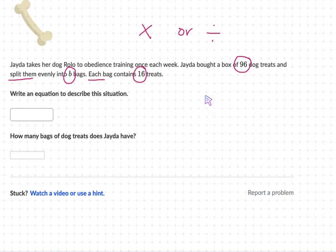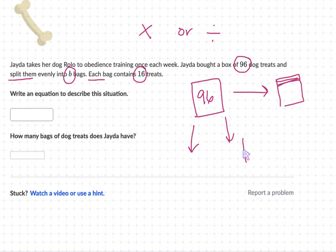So sometimes I get confused. So I like to draw pictures. So in my big box, I have 96 dog treats. And what she's doing is she's splitting them into little baggies. These like Ziploc bags. And in each of these Ziploc bags, there are 16 treats.